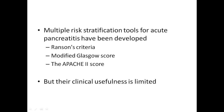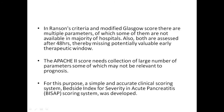For risk stratification there have been various scoring systems, including Ranson's criteria, modified Glasgow score, and the APACHE-2 score. However, all these criteria have limited clinical usefulness. In Ranson's criteria and the modified Glasgow score, there are multiple parameters, some of which are not available in hospital laboratories, and both scores are assessed after 48 hours, potentially missing the valuable early therapeutic window. The APACHE-2 score also requires a large number of parameters, some of which may not be relevant to the prognosis of the patient.